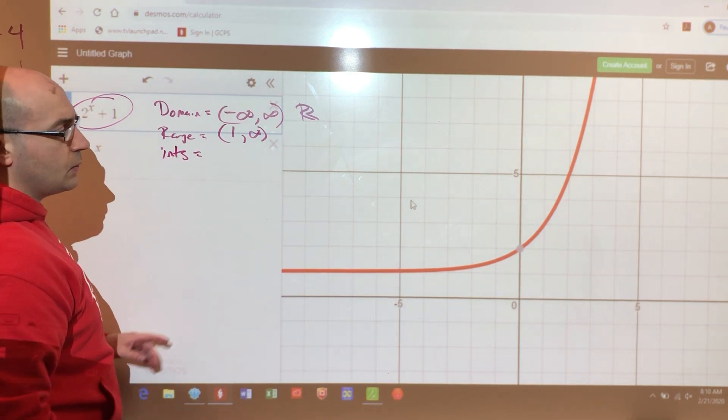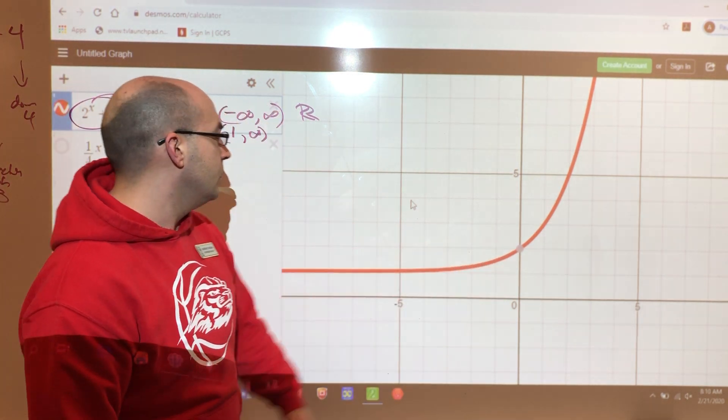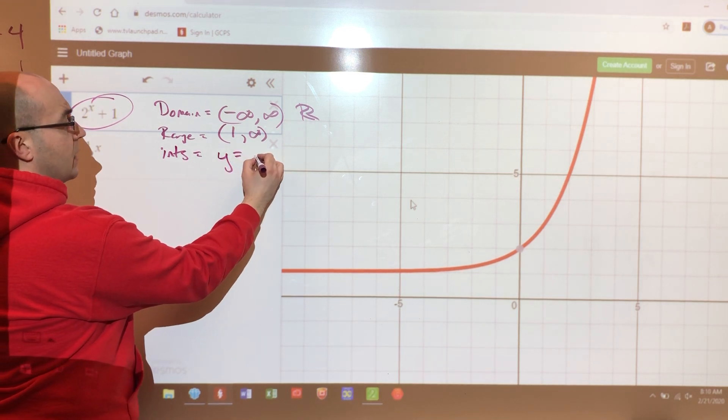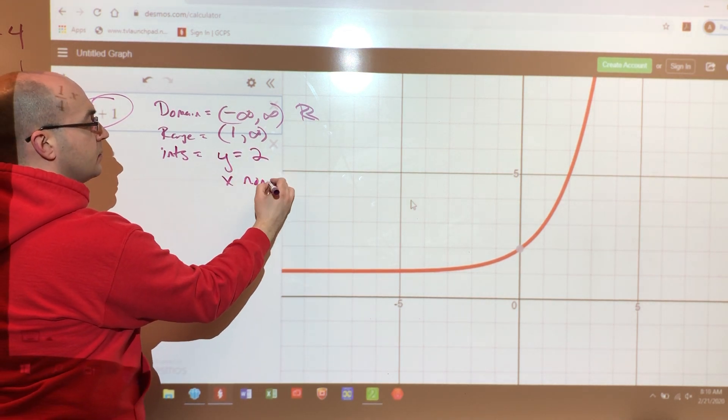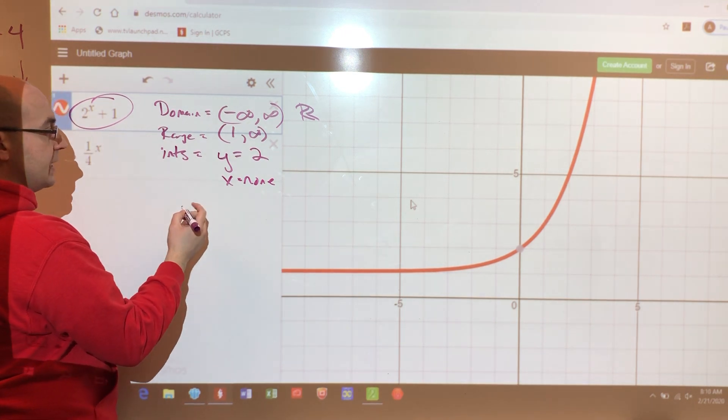Intercepts. Well, we can see the y-intercept that it's two. So y equals two, and the y-intercept is two. But the x-intercept, there are none. Please know that none is the right answer, not zero.